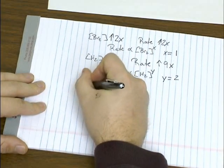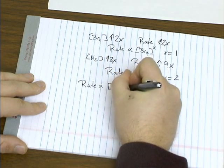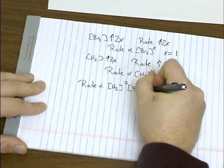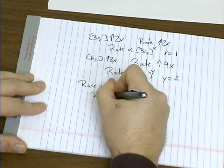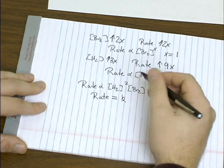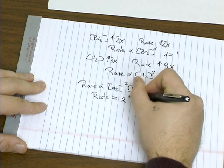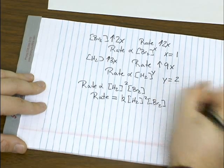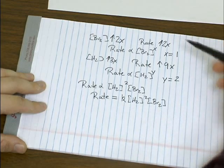So putting these two together, it looks like the rate is proportional to hydrogen squared and bromine. And in math if you want to make a proportionality an equality, you factor in a constant. And for rate laws that constant is usually equal to a lowercase K.